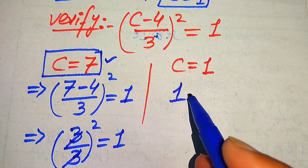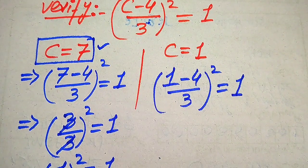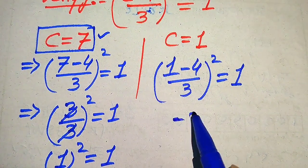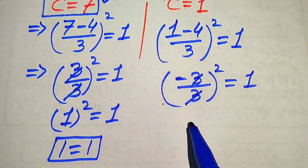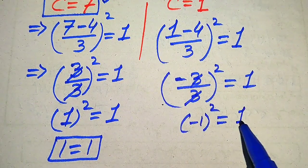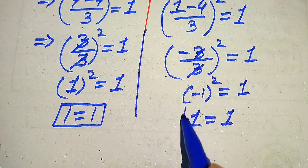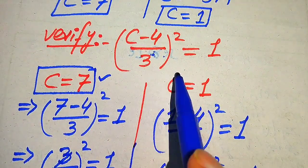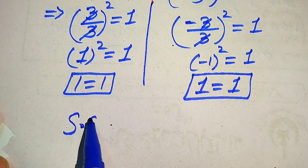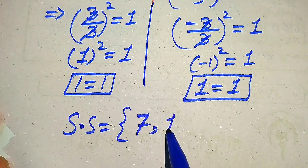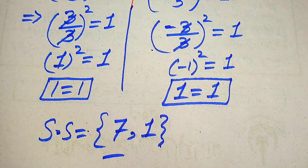Now we verify C equals 1. Substituting into the left hand side gives (1 minus 4) over 3, whole squared, equals 1. Since 1 minus 4 equals minus 3, we get (minus 3 divided by 3) squared equals 1. The 3 cancels, leaving (minus 1) squared equals 1, which equals 1. So C equals 1 also satisfies the equation. The solution set of the given equation is {7, 1}. Thank you for watching — please subscribe for more videos.